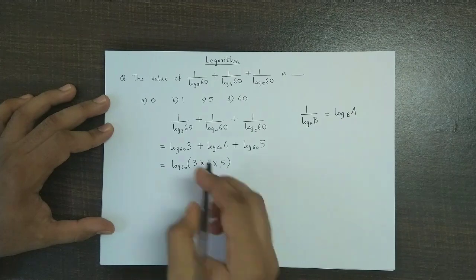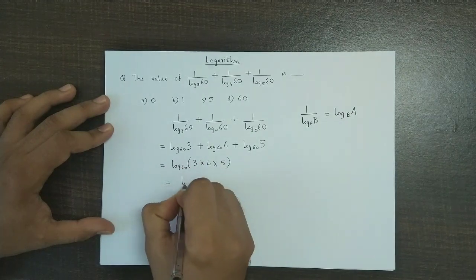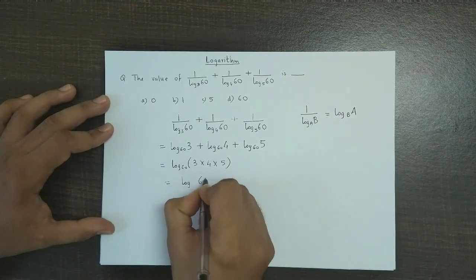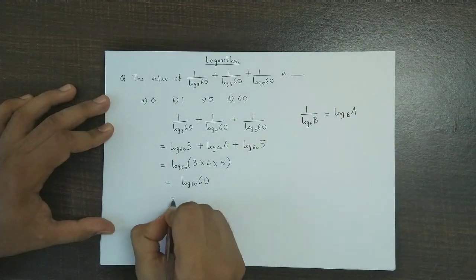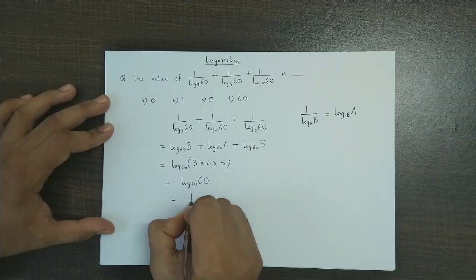Now 3 into 4 into 5 is 60. So we have log 60 to the base 60, and the value is 1.